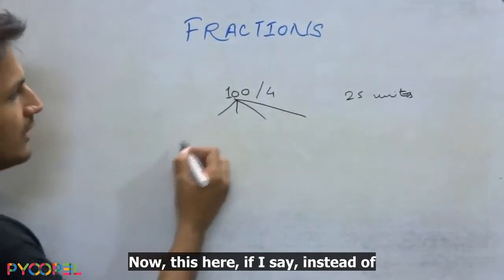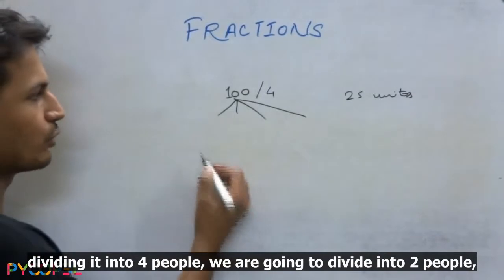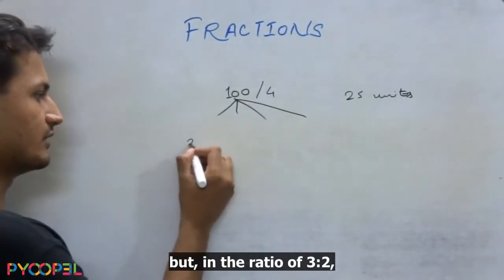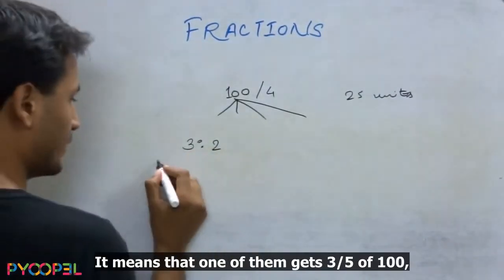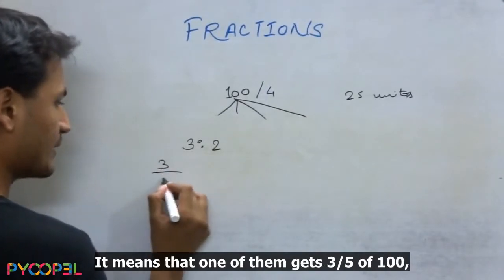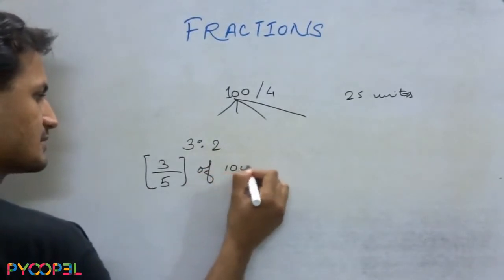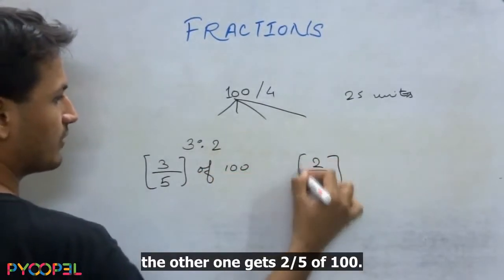Now if I say instead of dividing it into four people we are going to divide it into two people but in the ratio of three is to two. What does this mean? It means that one of them gets three by five of hundred. The other one gets two by five of hundred.